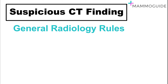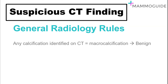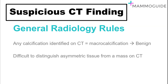There are a few basic general radiology rules that can help limit the number of patients sent for further mammographic evaluation. Any calcification identified on a CT scan is a macro calcification — this is by definition benign. You do not need to worry about any calcifications you see within the breast on a CT scan. Calcifications we look for on a mammogram are micro calcifications, much smaller than you can pick out on a CT scan.